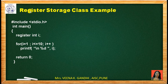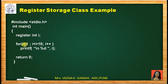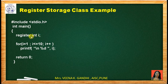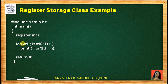Let us see an example of register storage class. Include stdio.h. In the main function, declare a variable i with register storage class of type int. Then use a for loop: for i equal to 1, i less than or equal to 10, i++, and print i. We print values from 1 to 10. The compiler does not guarantee that this variable will be stored in CPU registers — only if the CPU registers are free. The variable i is declared as register because it is required frequently in the loop, which can improve performance.